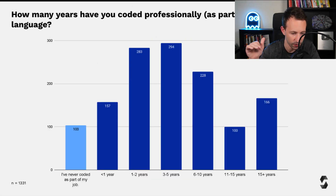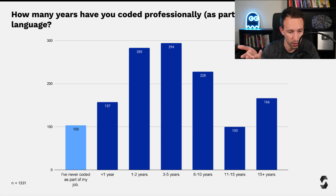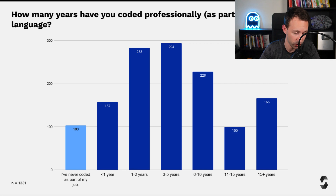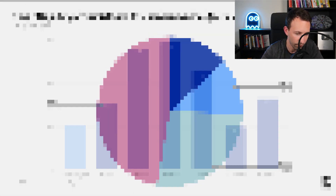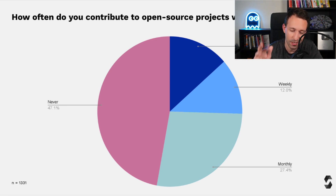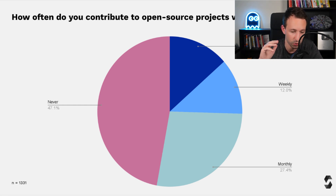How many years have you coded professionally? The biggest category is between three to five years, which makes sense because in order to understand Web3 you already need some foundation in Web2. There are also junior developers and total beginners, so it is possible to get started from scratch. About half of respondents contribute to open source Solidity projects, which is great for personal enjoyment and career growth, though I wouldn't necessarily recommend it for total beginners.